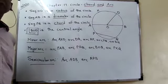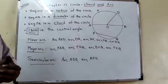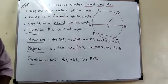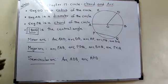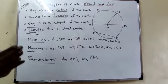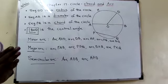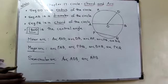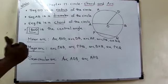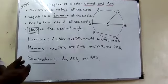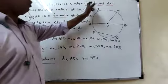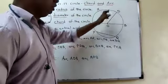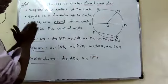Good morning students, today we are going to start chapter number 17 — Circle, Chord and Arc. Before starting, I want to tell you that chapter number 16, which is Surface Area and Volume, is omitted for this year. So I'm directly starting the last chapter, chapter number 17: Circle, Chord and Arc. First I'll give the description — it's an introduction.